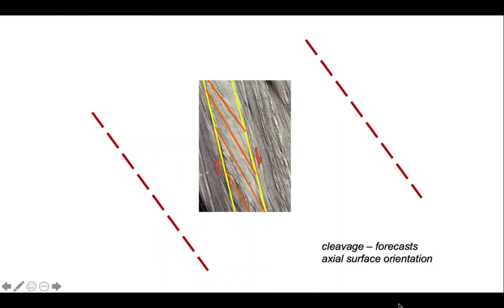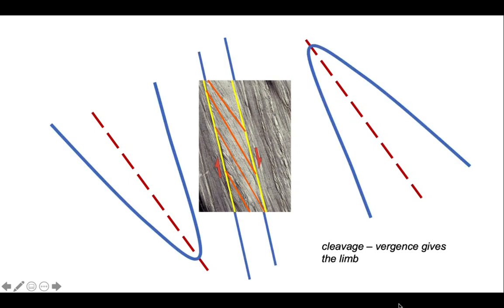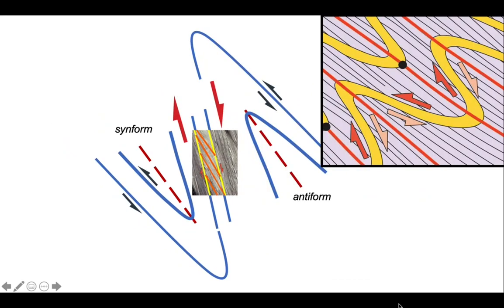We can use the orientation to forecast the axial surface orientation and the location of antiform and sinform hinges. The cleavage, if it's axial planar, predicts the orientation of the axial surface of the fold. If the cleavage is inclined, these are inclined folds dipping to the right in our view.